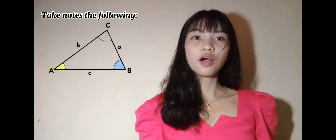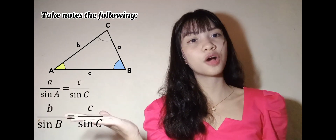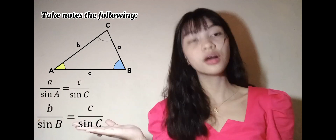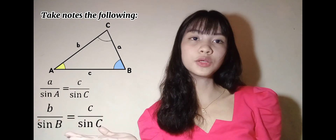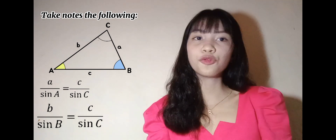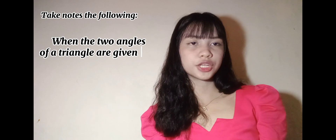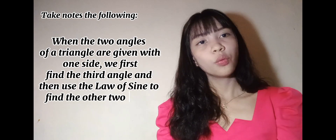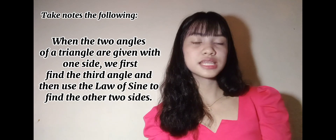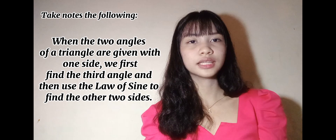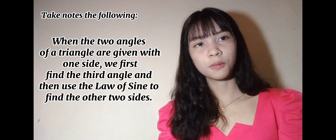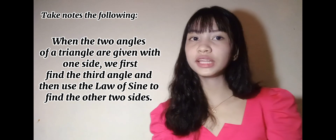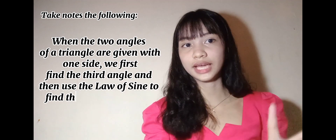So all in all, these are the parts of our sine law that we can use in finding the unknown side of an oblique triangle. When two angles of a triangle are given with one side, we find first the third angle, and then we use the Law of Sines to find the other two sides.